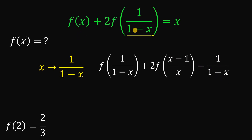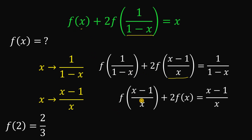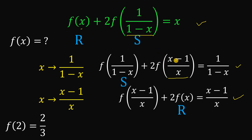What we do is replace all of this x with 1 over 1 minus x. Then the second substitution replaces all x with x minus 1 over x. If we substitute that value into x, we get f of x minus 1 over x plus 2 times f of x equals x minus 1 over x. Using these three equations, we can now solve for the value of f of x. Let capital R be equal to f of x, capital S be f of 1 over 1 minus x, and capital T be f of x minus 1 over x.